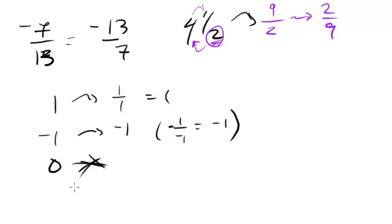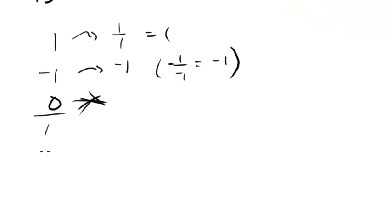0 has no reciprocal, because if you think about it, it would be, let's say this were 0 over 1. Its reciprocal would be 1 over 0, and this is undefined. So 0 will never have a reciprocal. I don't think they'll ever ask you about that, but it's just something that you should keep in mind.